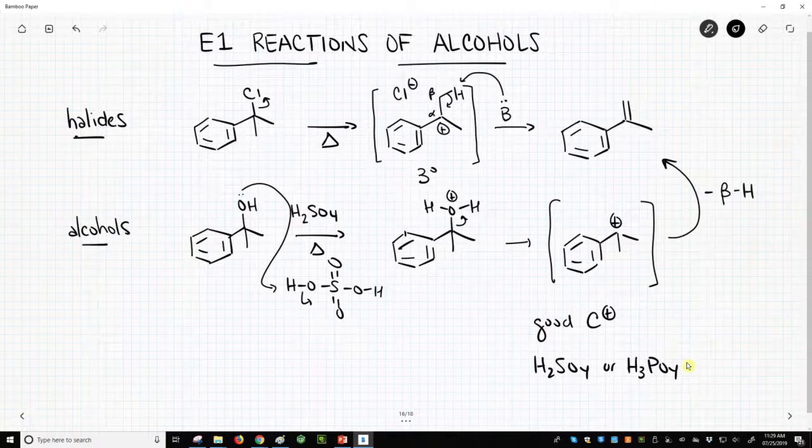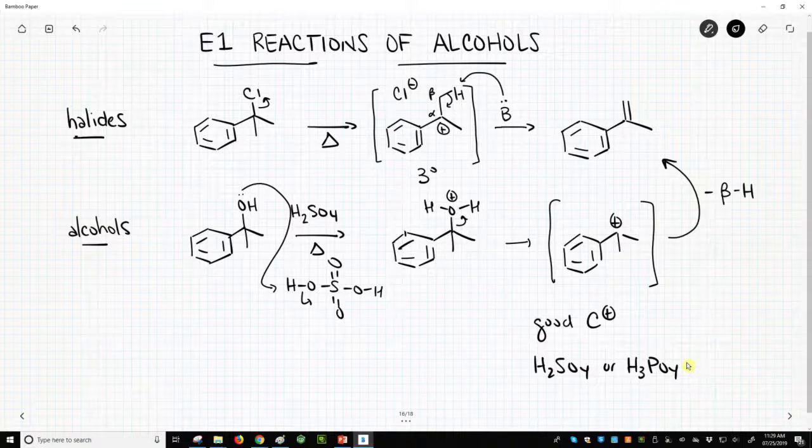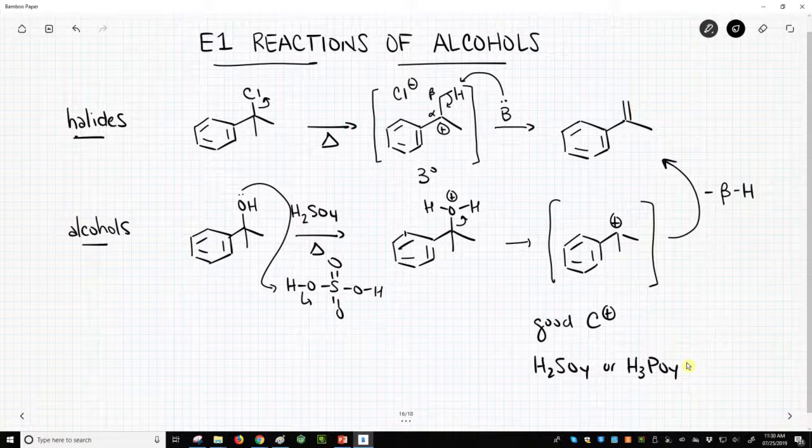And those are really the main points. We can take alcohols, heat them up in the presence of a strong acid. No solvent is necessary, and we will drive off water and form our E1 alkene product.